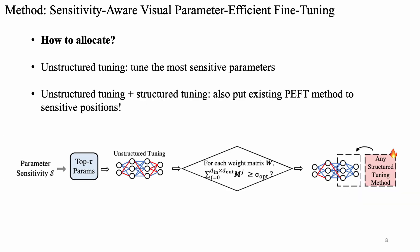Next, we study how to allocate the trainable parameters. The most straightforward way is to directly tune the top most sensitive parameters, which we term unstructured tuning. However, we find this approach lacks enough capacity. So we also introduce structured tuning methods to the sensitive weight matrices found by our parameter sensitivity. In this way, we fine-tune with both coarse and fine granularity.